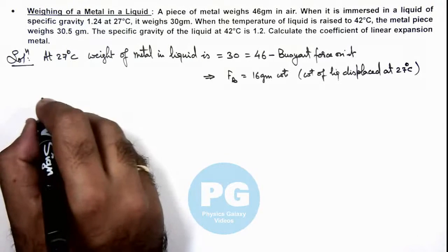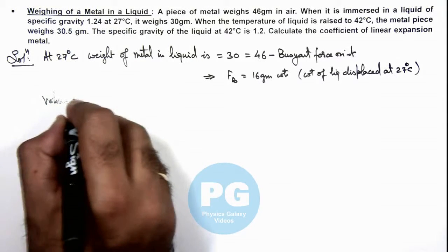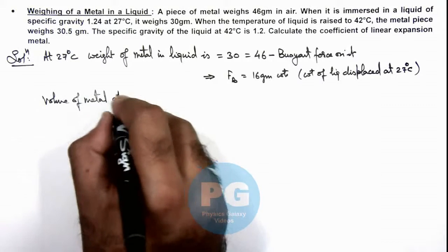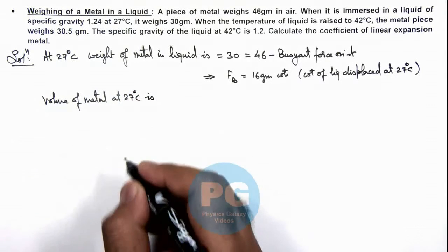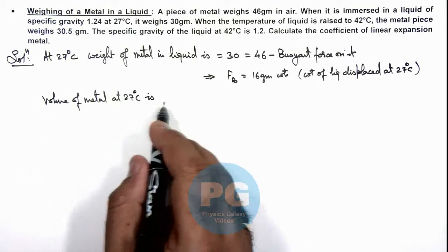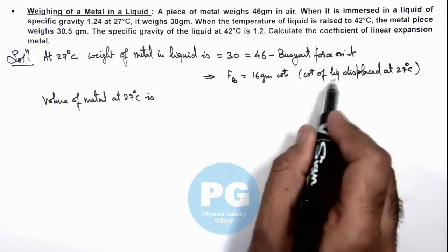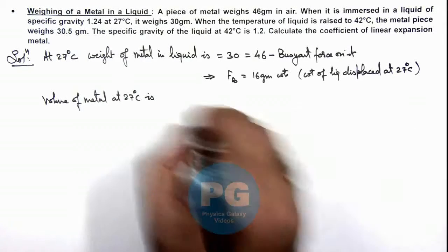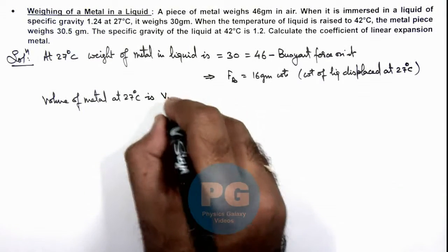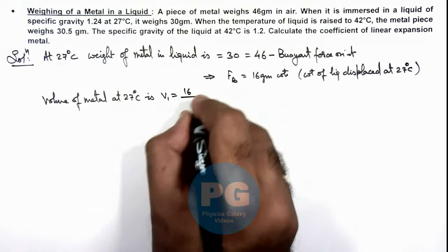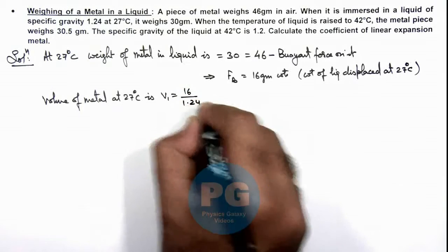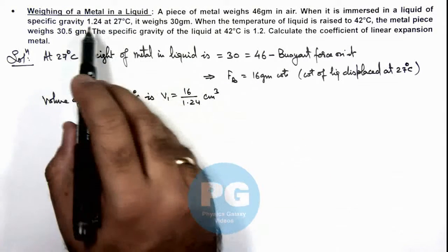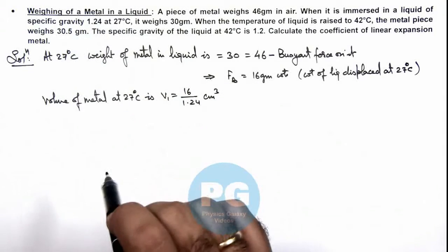We can now calculate the volume of metal at 27 degrees Celsius. This can directly be given as: 16 grams weight of liquid is displaced, so volume of metal will be equal to the volume of liquid displaced. V1 at 27 degrees Celsius is 16 divided by 1.24 centimeter cube, as at 27 degrees the liquid specific gravity is 1.24.